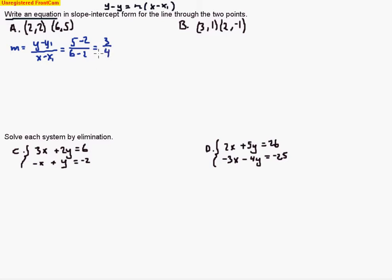So 3 fourths, that is the slope of our line. We're going to take that slope and one of the points. So I'm going to choose to take 6, 5. y minus 5 equals 3 fourths times x minus 6. So we go ahead and do some work there. Multiply that 3 fourths over that subtraction.